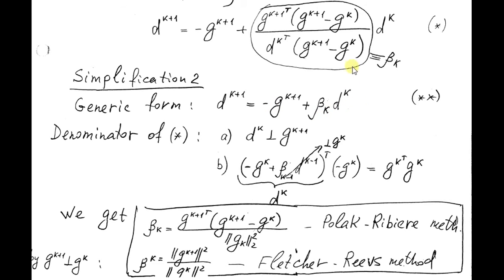Let's look on denominator here. By expanding manifold property, dk transpose is orthogonal to gk plus 1. So we can remove gk plus 1 from the formula.